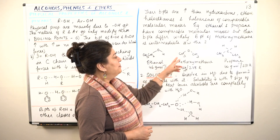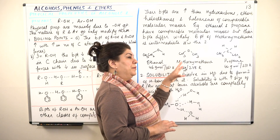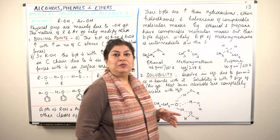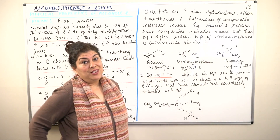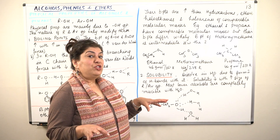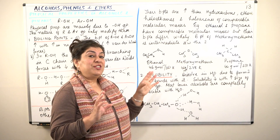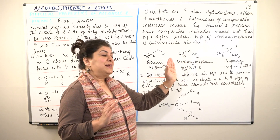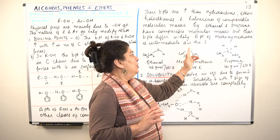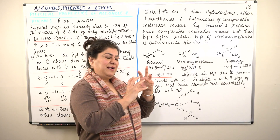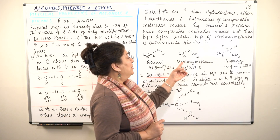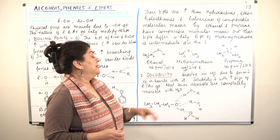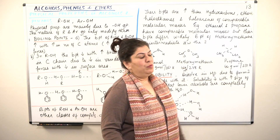Another example is methoxymethane, which also has a molecular mass in the same range — 46 — but its boiling point is intermediate between propane and ethanol. There is no proper hydrogen bonding in methoxymethane, but there is electronegative oxygen, so its boiling point is naturally higher than propane. Propane is the lowest, ethanol has the highest boiling point, and methoxymethane is intermediate, although all have almost the same masses.